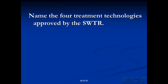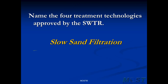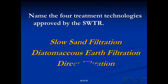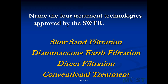Name the four treatment technologies approved by the surface water treatment rule — these are removal technologies. They are slow sand filtration, diatomaceous earth filtration, direct filtration, and conventional treatment. You can use other technologies, but you need special advanced approval. These are the officially approved technologies, and the objective here is the first barrier of the surface water treatment rule: the physical removal of pathogens.